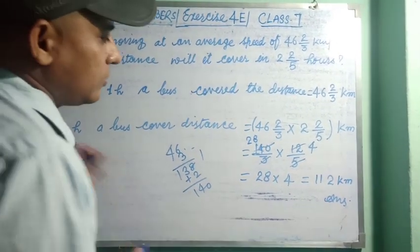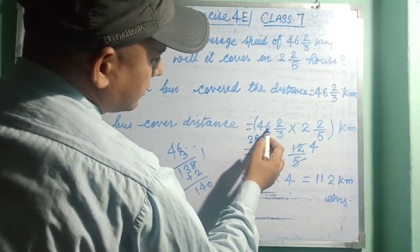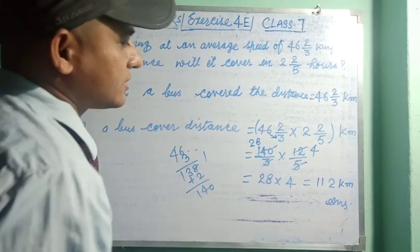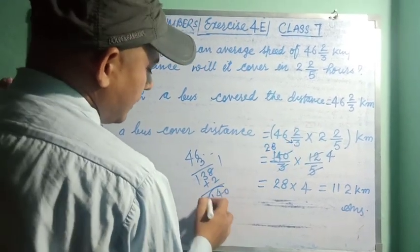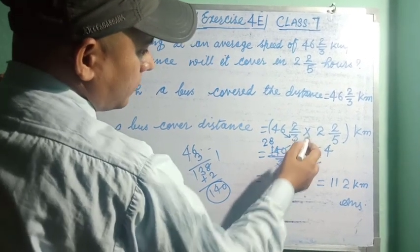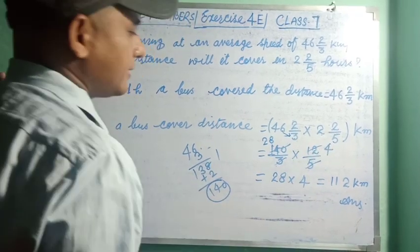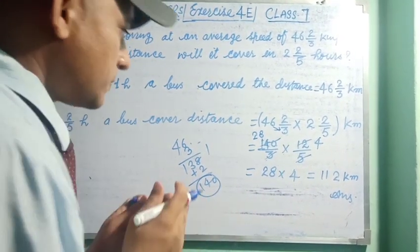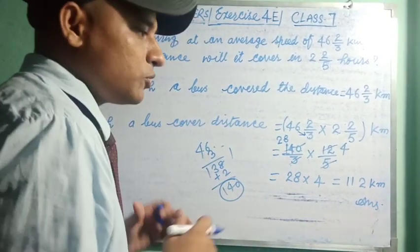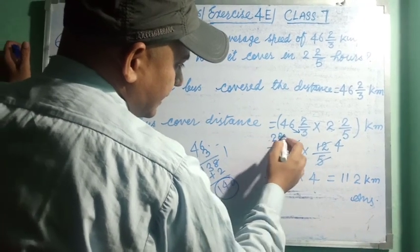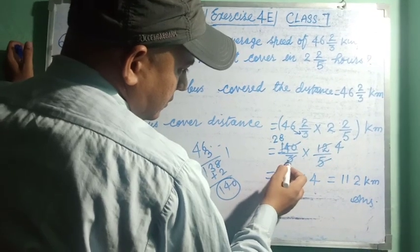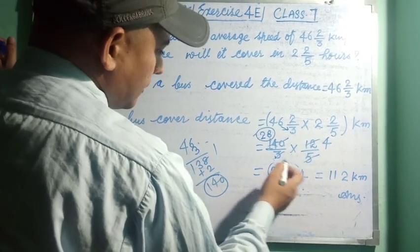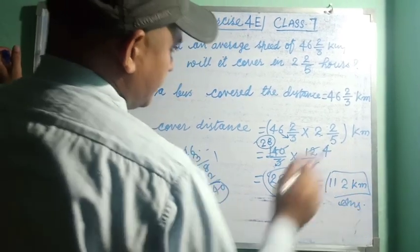We convert the mixed fractions to improper fractions. 46 × 3 + 2 = 140, so 46⅔ = 140/3. And 2 × 5 + 2 = 12, so 2⅖ = 12/5. Now 140 is divisible by 5: 140 ÷ 5 = 28. And 12 is divisible by 3: 12 ÷ 3 = 4. So we get 28 × 4 = 112 kilometres. That is your answer.